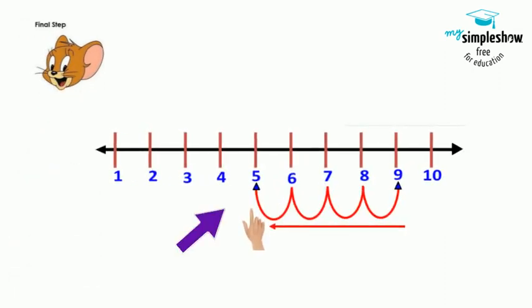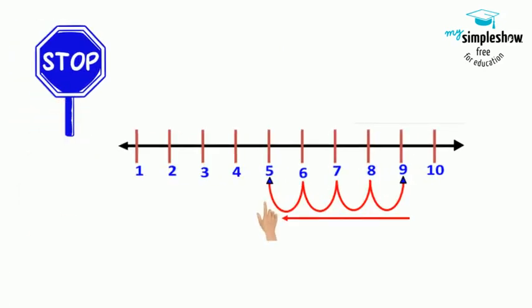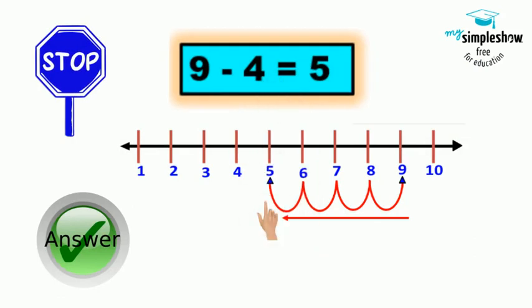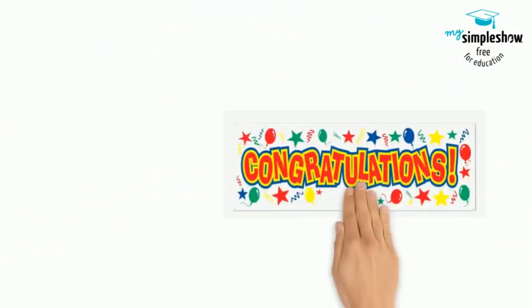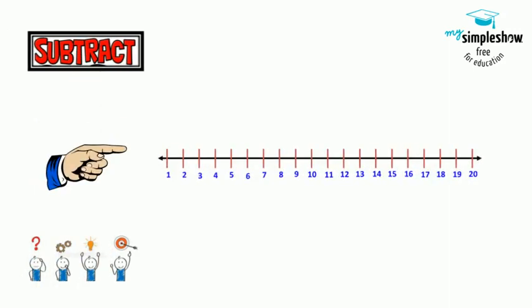Finally, after going back you will reach the number 5. Stop there. That's the answer. You have successfully solved the sum 9 minus 4 to get the answer 5. Congratulations again!